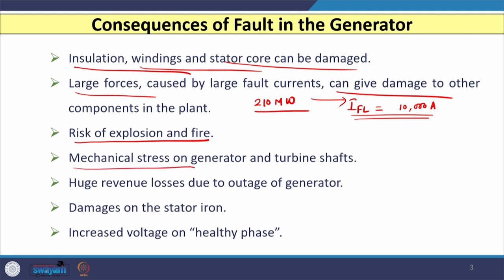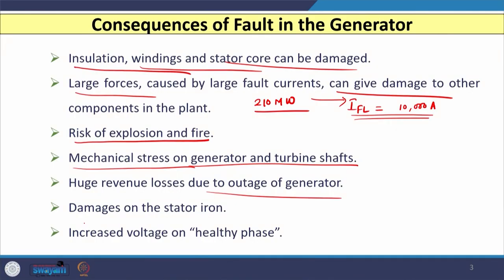Mechanical stress on generator and turbine shafts is also possible, and huge revenue losses result from outage of the generator. Outage or damage to a generator generating 210 megawatt, 200, or 300 megawatt of power always causes revenue loss. Damage to the stator iron is also observed, and if a fault occurs in one of the phases or windings, the other two winding voltages can increase.